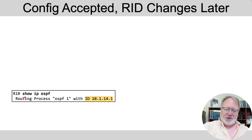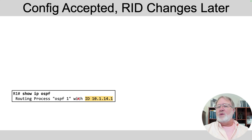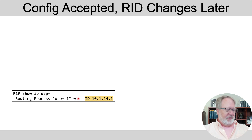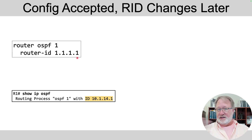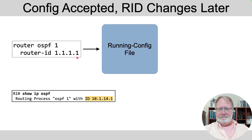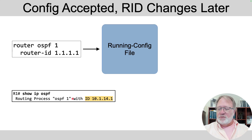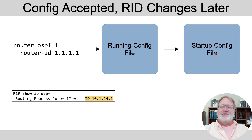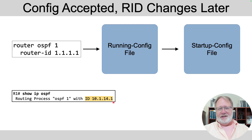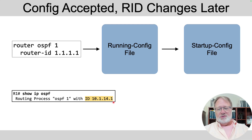Imagine you do a 'show ip ospf' command and see the current router ID — which happens to also be an interface IP address, meaning R1 fell down to rule 3. Now you enter config mode and configure the 'router-id' command to set it to 1.1.1.1. Those commands go into the running config file immediately. But if you repeat the 'show ip ospf' command, it would still show the old router ID — it hasn't updated yet.